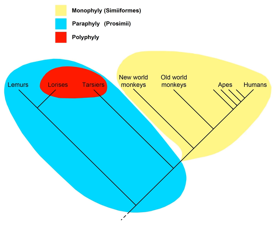In cladistics, a monophyletic group, or clade, is a group of organisms that consists of all the descendants of a common ancestor. Monophyletic groups are typically characterized by shared-derived characteristics, which distinguish organisms in the clade from other organisms.